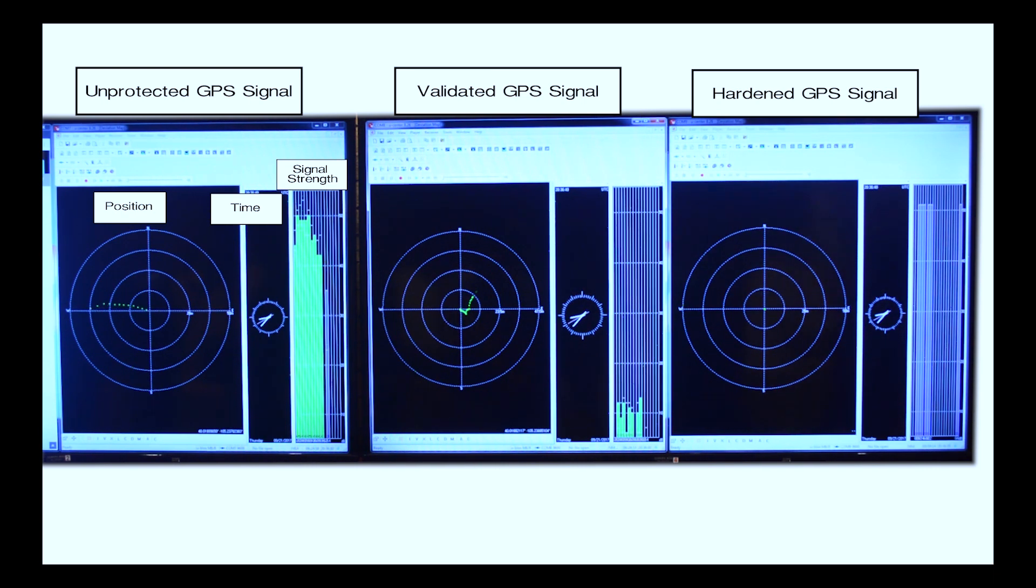Then when we flip back over to the hardened output, we see, again, a very clean, no position movement status, signal strength of the satellites very, very strong. So this is the results of our three receivers in a spoofed event.